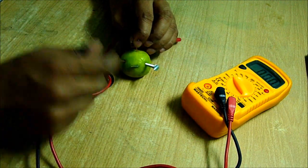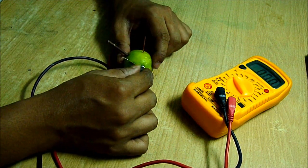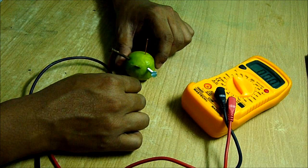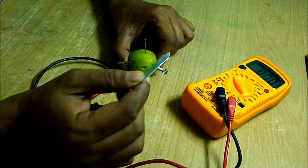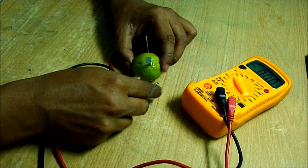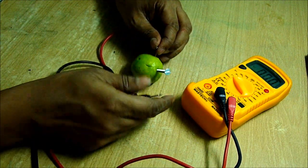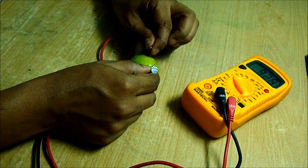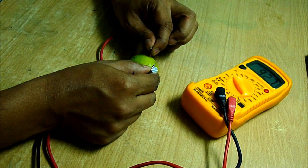You can see here, the galvanized one is the best. I'm not going to use this. I'm going to use the copper and the galvanized screw to get 0.92 volt.